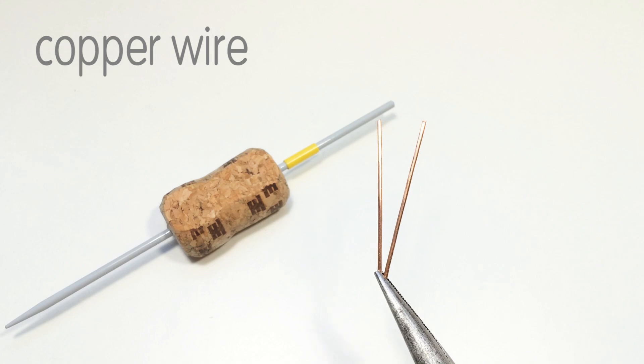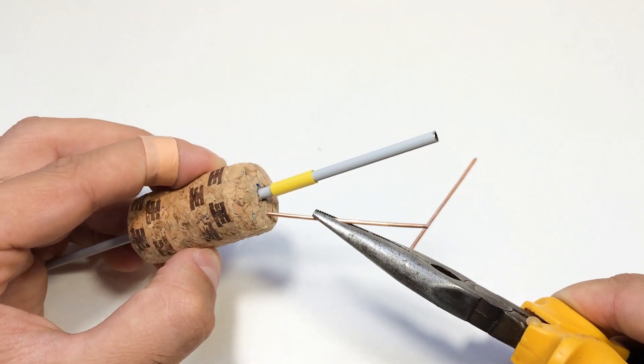Now we take two pieces of copper wire. We install these pieces of wire into the cork.